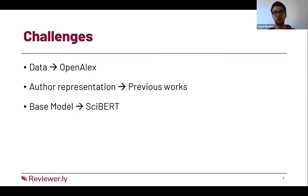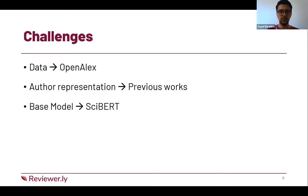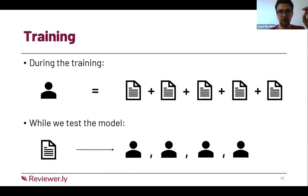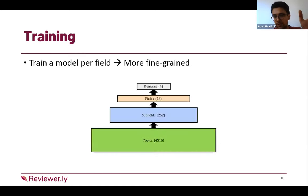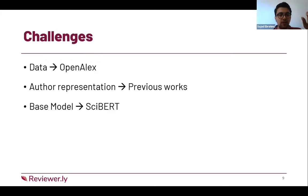Another challenge was how to represent authors. In information retrieval, both queries and documents are text — maybe a paragraph or a sentence. But here we need a textual representation for each author. The approach we used was to concatenate all the abstracts of each author's works over a specific period of time to represent each author by that data. So each paper — the query — can be represented by its title or abstract, while each author is represented by the concatenation of abstracts of their works.